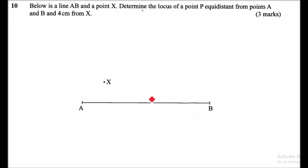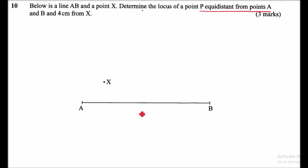To do this question, you need to bisect AB so that you get the perpendicular bisector — that will be the point where P is equidistant from A and B. Then, since P is 4 centimeters from X, you take X as the center of a circle and draw a circle. Point P will be where the circle and the perpendicular bisector intersect.